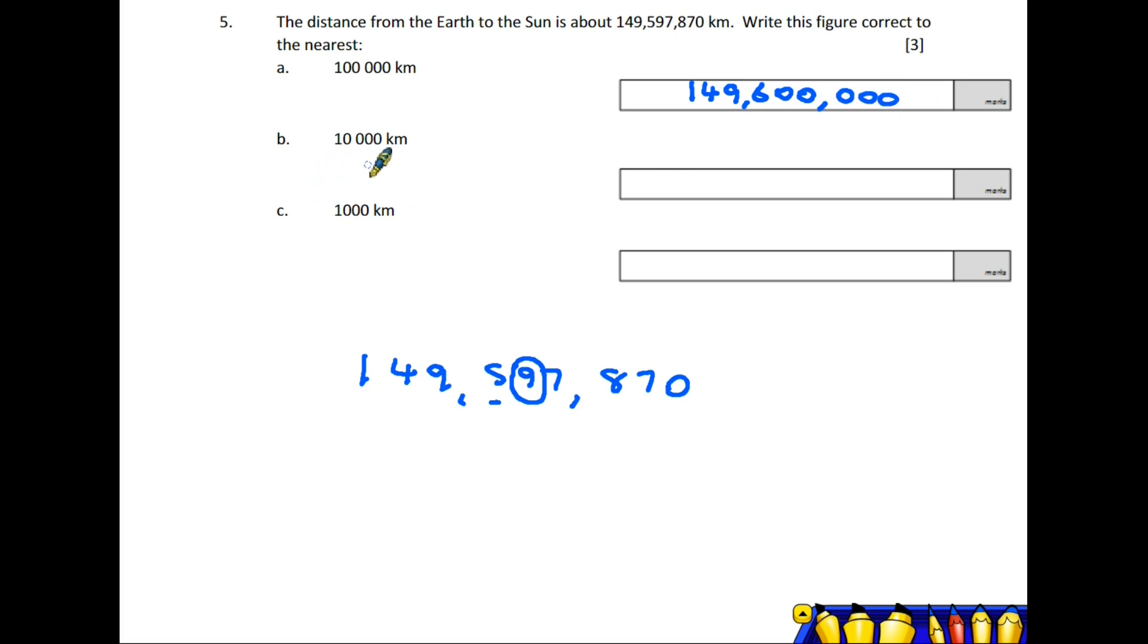Part B asks for the nearest 10,000. The 10,000 column is the nine. The next number is seven, which is five or above, so we round up. The nine rounds up, but that makes it 10, which doesn't work. We have to transfer that to the next number. The answer is the same as part A: 149,600,000.